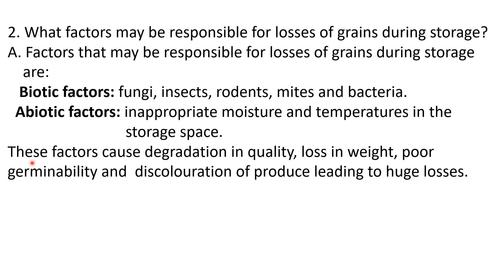These factors cause degradation in quality — grain may look okay visibly but quality degrades. There is also loss in weight, as grains can become lighter. Poor germinability means seeds fail to germinate. And discoloration of the produce is also a sort of damage, leading to huge losses. Care must be taken against both biotic and abiotic factors to prevent grains from getting damaged.